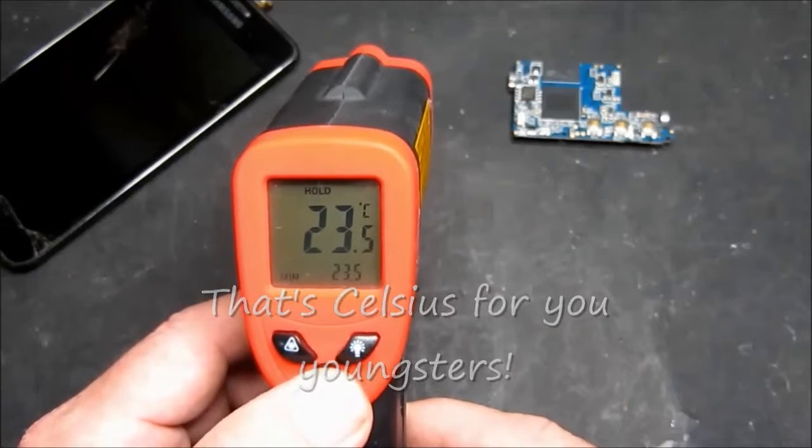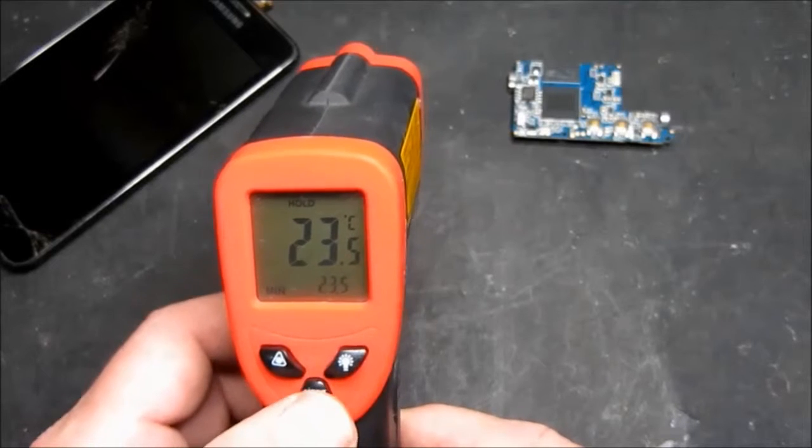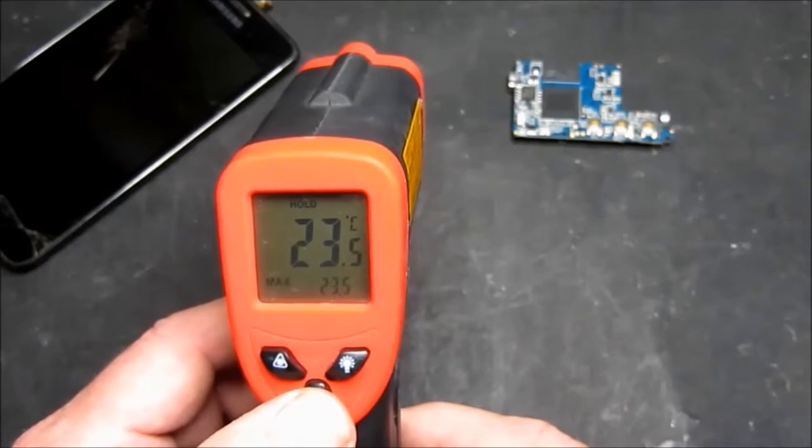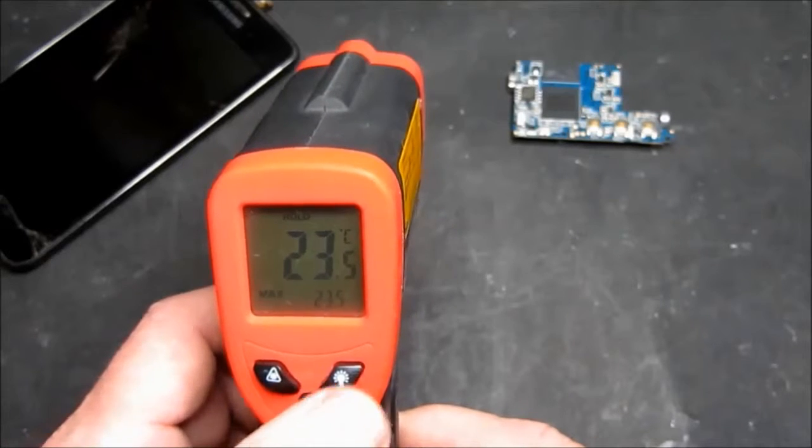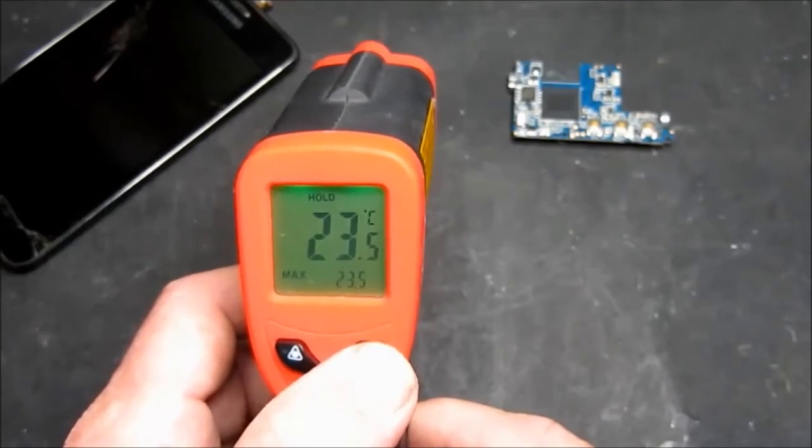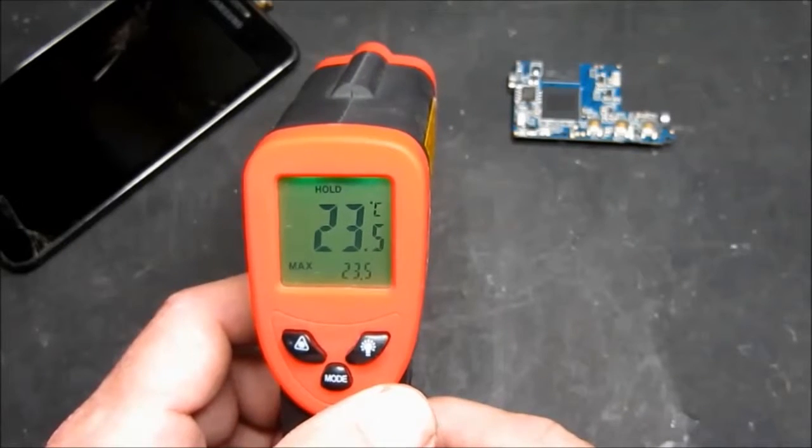Also here we can change between showing the maximum and the minimum readout down here in the corner, which is a very useful feature. Also we have a handy dandy backlight so that it's very useful.